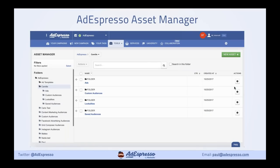Another feature in AdEspresso is what we call our Asset Manager. You can easily end up creating hundreds of custom audiences and get confused — especially if you're an agency dealing with lots of clients. Within AdEspresso, we have an Asset Manager where you can create folders for different clients or team members and store custom audiences organized within them. So that's kind of a blueprint — I know there's a lot to cover, but I just wanted to give you an idea of the basics. Download those workbooks and spend some time going through the tools.